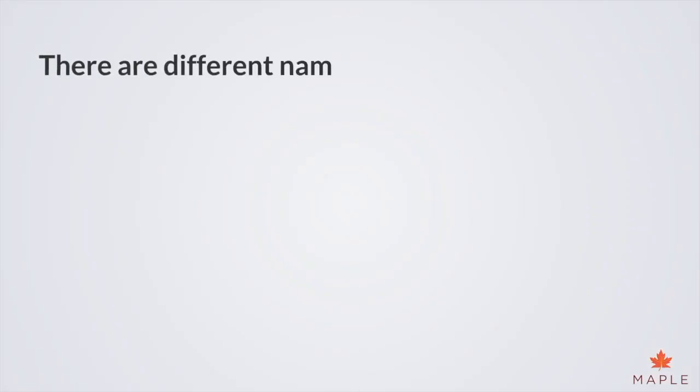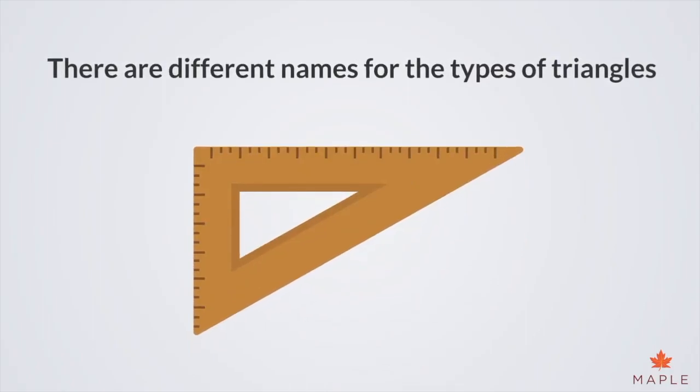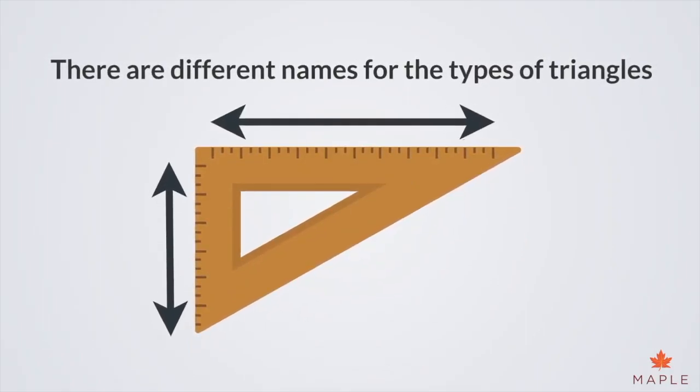There are different names for the types of triangles. A triangle's type depends on the length of its sides and the size of its angles.